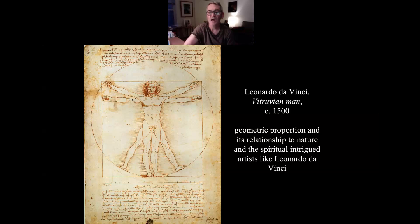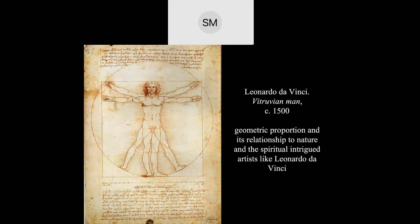Geometry — bringing back technical geometry and understanding of proportion as the Greeks and Romans applied it was one of the important things of this period. Is anyone familiar with this drawing? The proportions of human beings — can you see from this what it's meant to express?